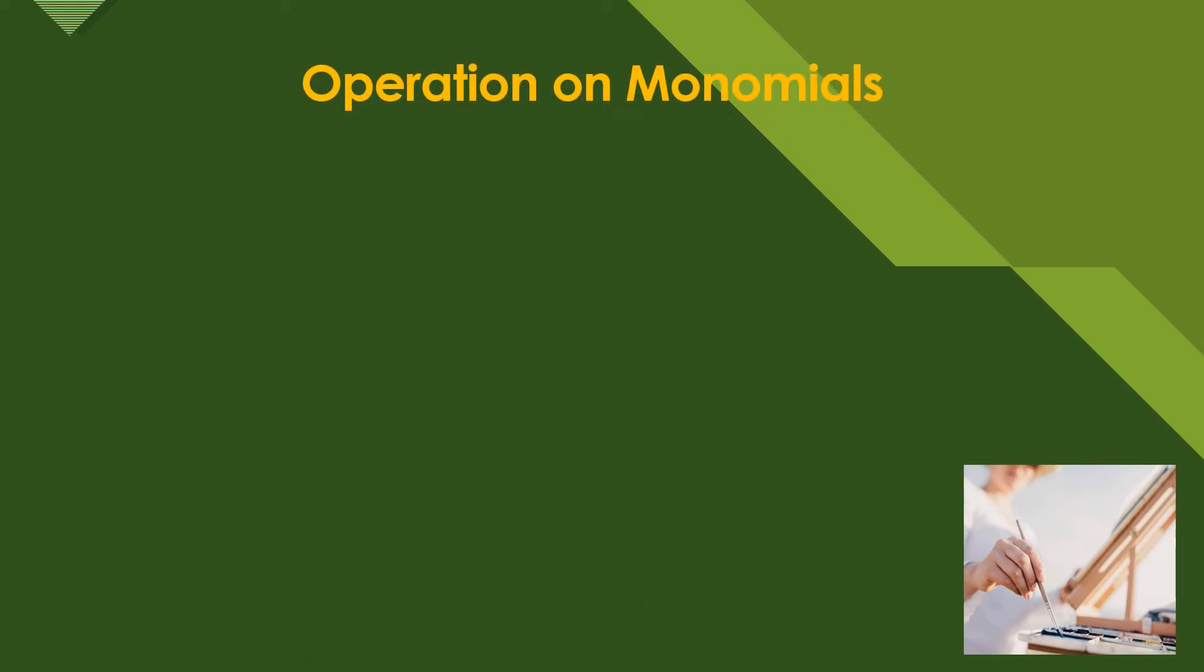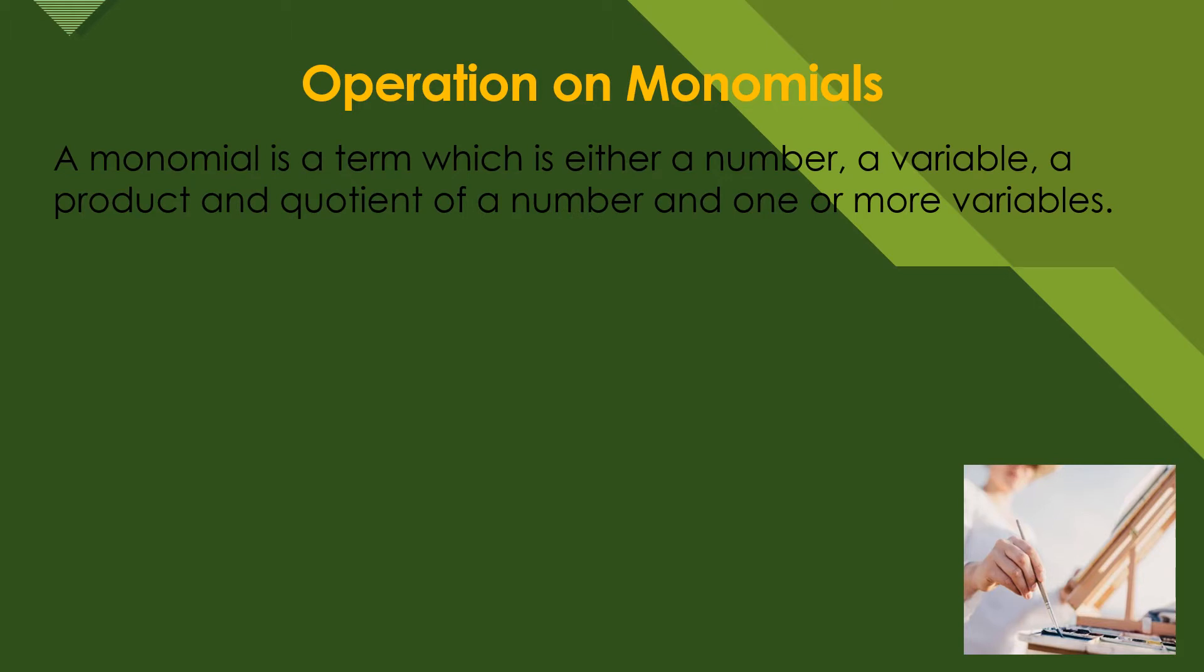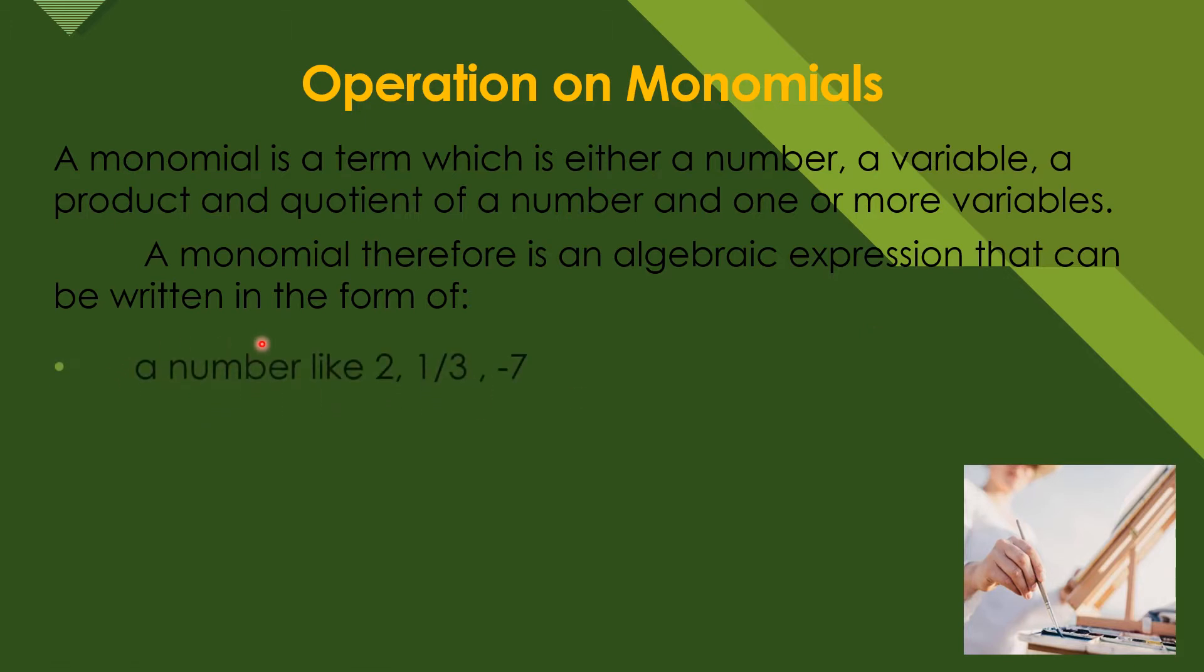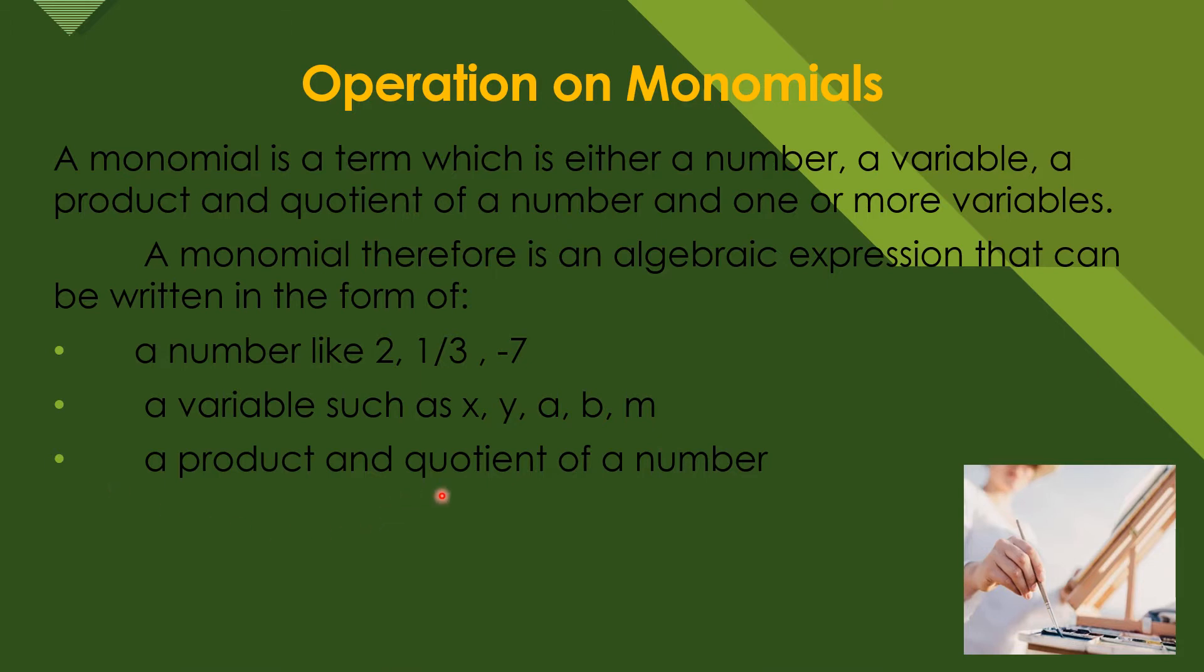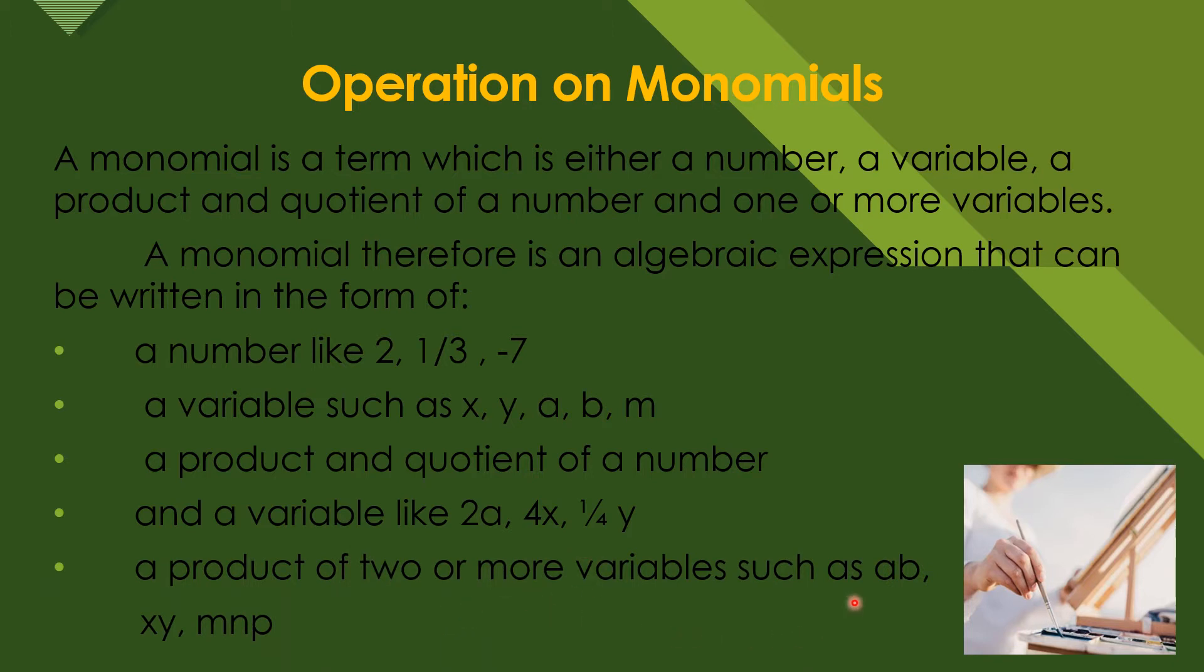Operations on monomials. A monomial is a term which is either a number, a variable, a product and quotient of a number and one or more variables. A monomial therefore is an algebraic expression that can be written in the form of a number like 2, 1/3, or -7, a variable such as x, y, a, b, m, a product and quotient of a number like 2a, 4x, 1/4y, or a product of two or more variables such as ab, xy, or mp.